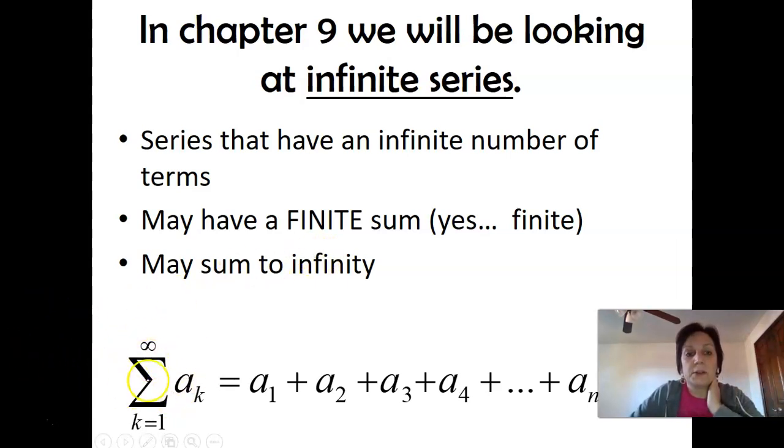So the general form of a series looks like this. We have not seen this notation since Riemann sums. We have the summation, which is saying we're going to add a bunch of stuff up. This right here will eventually be a rule for how to generate the terms, but right now they're just putting in a sub k, but notice like it's a sub k and all the terms are a1, a2, a3.